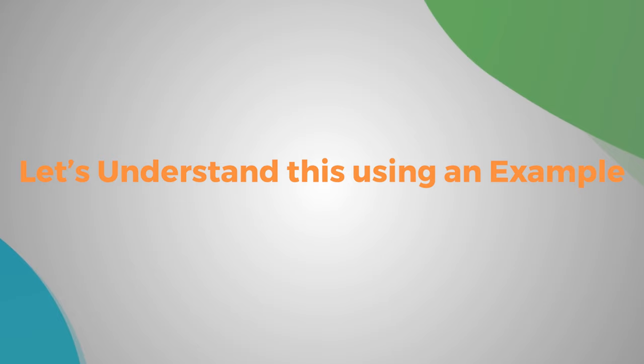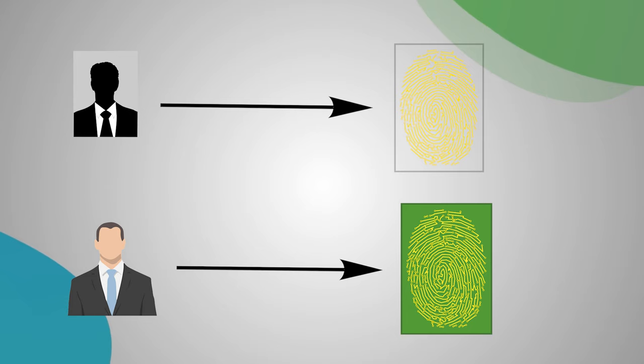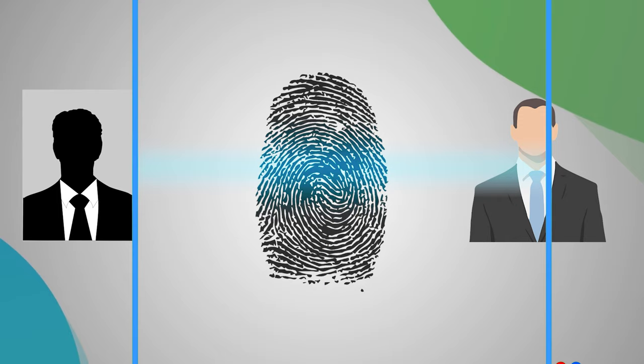Now that you know what hashing is, let's discuss the SHA-256 algorithm. Let's understand this using an example. There's a person, could be you or me, and we have a fingerprint. Different people have different fingerprints. There is a possibility that two persons have the same fingerprints, but it's very unlikely.